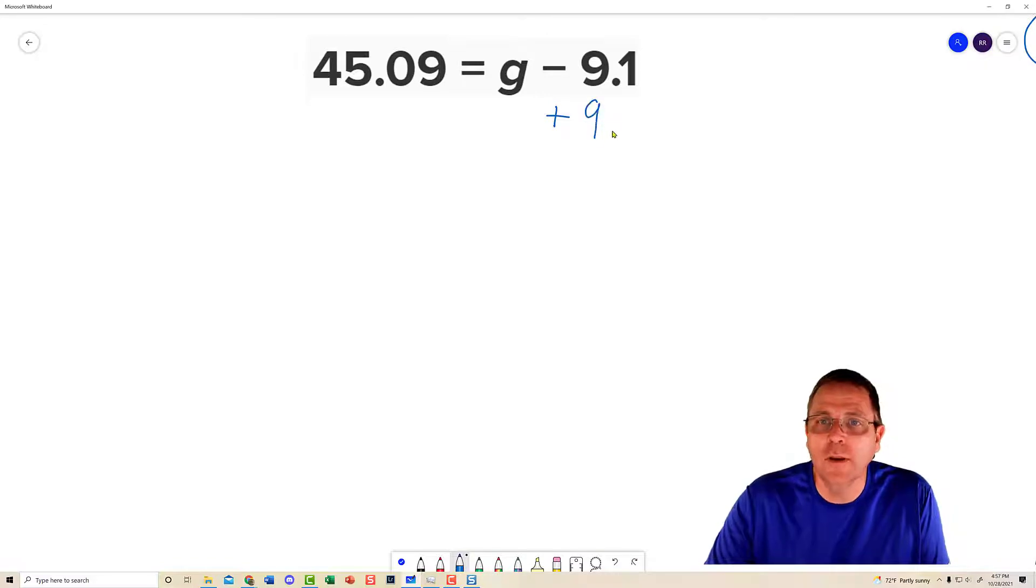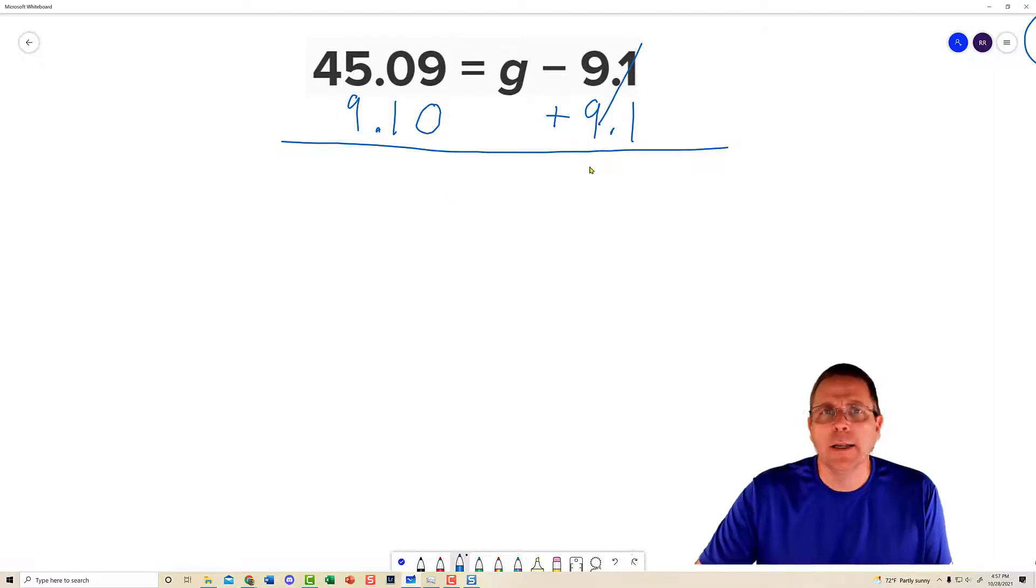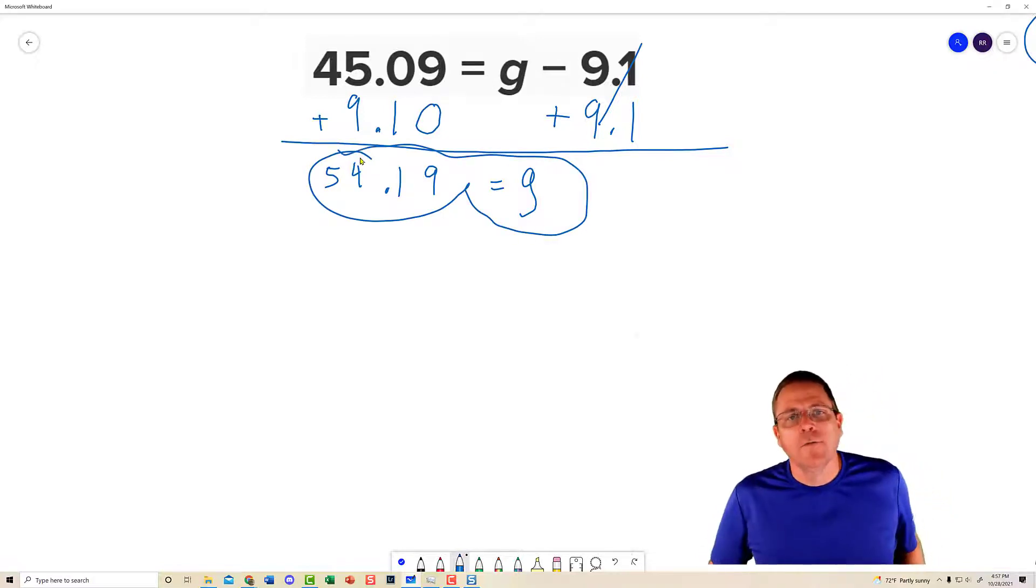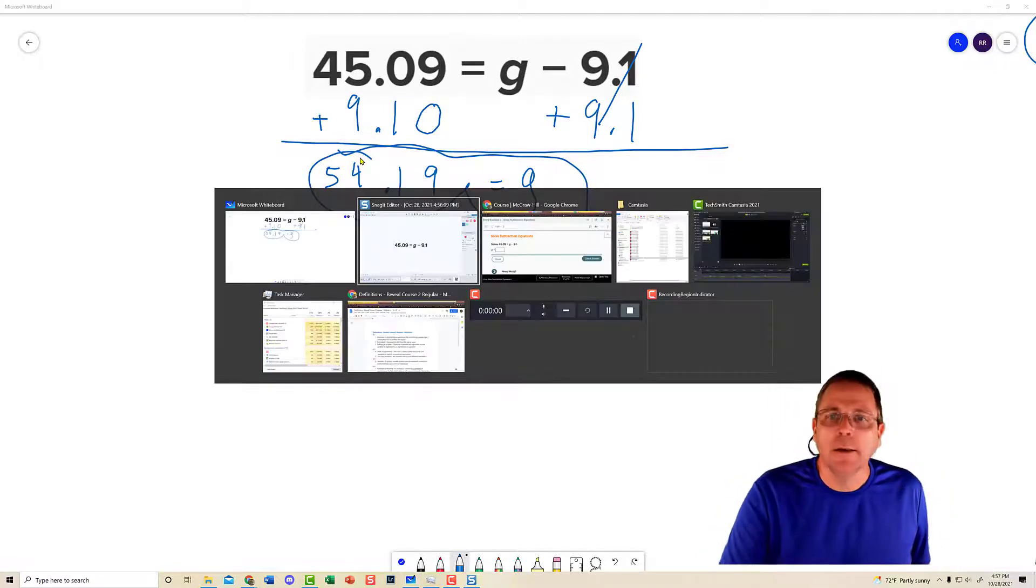I added 9 and 1 tenth on the right. I'm going to add 9 and 1 tenth on the left. And I'm going to go ahead and extend a zero there on the left as well. These 9 and 1 tenths, they just zeroed each other out. Leaving g all by sweet little lonesome. And on this side, I'm going to have a 9. We're adding here. I'm going to have a 1, a decimal. And then this one is going to become 54. So the answer is going to be 54 and 19 hundredths.